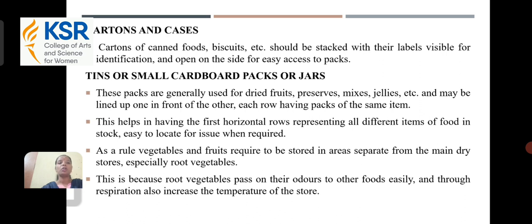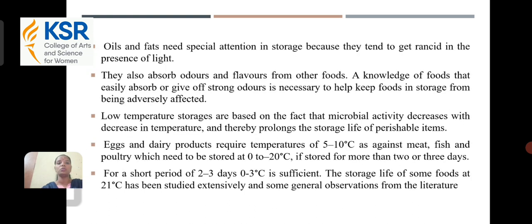Tins or small cardboard packs or jars: these packs are generally used for dried foods, preserves, mixes, jellies, etc., and may be lined up one in front of the other, each row having packs of the same item. As a rule, vegetables and fruits need to be stored in areas separate from the main dry stores, especially root vegetables. This is because root vegetables pass on their odors to other foods easily and through respiration also increase the temperature of the store.